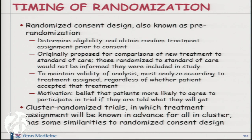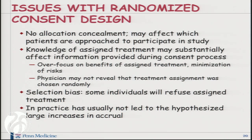Cluster randomized trials in which the treatment assignment is going to be known in advance for all in the cluster will have some similarities to the randomized consent design. The issues with the randomized consent design are that there's no allocation concealment, so this can affect which patients are even approached to participate in the study. A bigger concern perhaps is that the knowledge of the assigned treatment may substantially affect the information provided during the consent process. There can be an over-focus on the benefits of the treatment the patient would actually get, a minimization of the risks. Physicians may not even reveal or may slough over the fact that the treatment assignment was chosen randomly. There can be selection bias — some individuals will refuse the assigned treatment — that selection bias won't operate if you analyze as randomized, but then you may have a substantial dilution of the results.